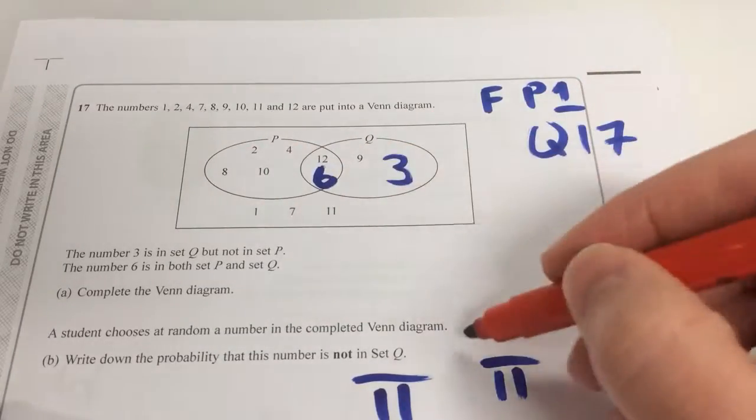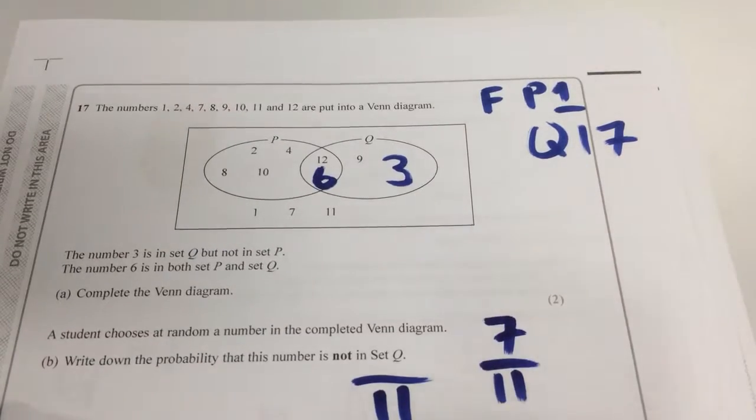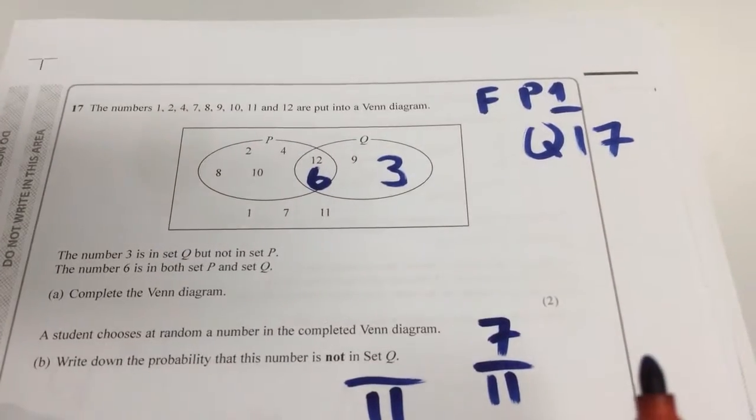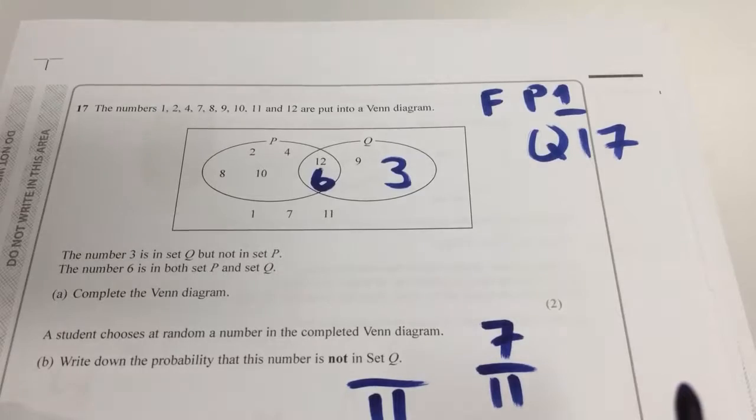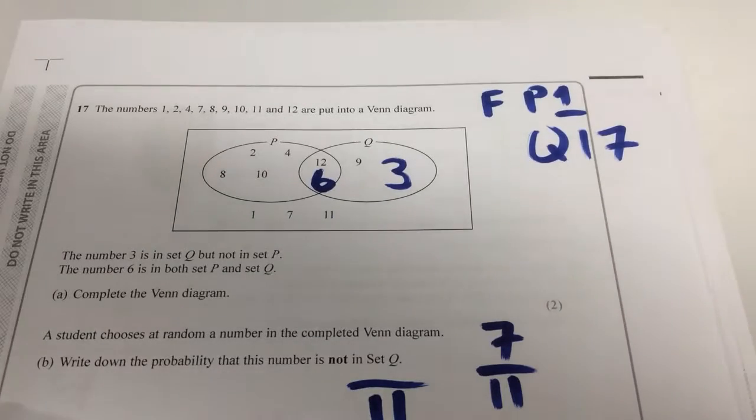So 7 numbers outside of Q. 1, 2, 3, 4, 5, 6, 7. Fantastic. Thanks for watching. Don't forget to like, subscribe, share, and continue watching this exam series.